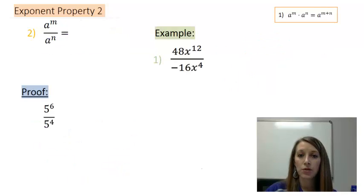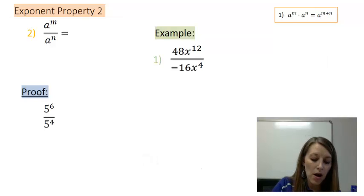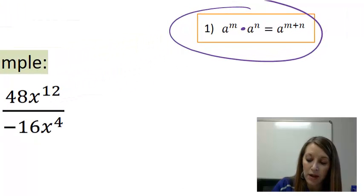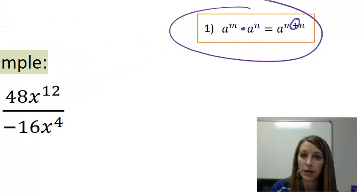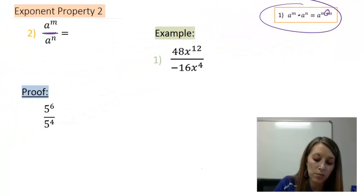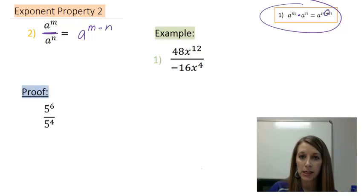Now property number two follows very closely from property number one. Here I have the same bases, but instead of multiplying, they are being divided. So if I reference property number one, if I'm going to multiply them and that changes it into addition, we can assume that division changes it into subtraction. So I here subtract my exponents. I take my top one minus my bottom one.